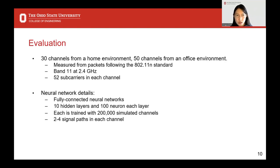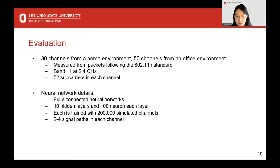For our evaluation settings, we use a total of 80 channels — 30 collected from a typical home environment and 50 from a typical office environment. These channels are measured from 802.11n packets at 2.4 GHz band, and each channel contains values of 52 data subcarriers. The neural network models in both modules are fully connected networks with 10 hidden layers and 100 neurons in each layer, trained with 200,000 channels with 2 to 4 signal paths per channel.